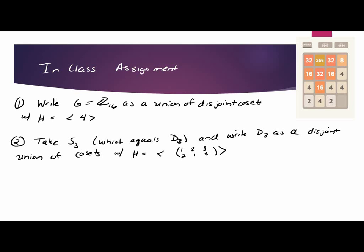So, this one I do want you to try out here. You already did G equals Z at 16. You got your test back. Write it as a union of disjoint cosets with H equals the cyclic subgroup 4. And take S3 also and try it out with S3, which is D3. It's the same thing. And write D3 as a disjoint union of cosets with H equals 2, 1, 3.